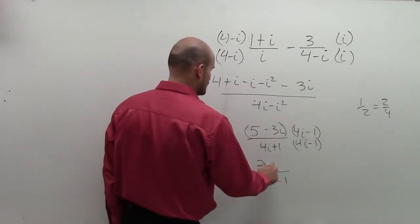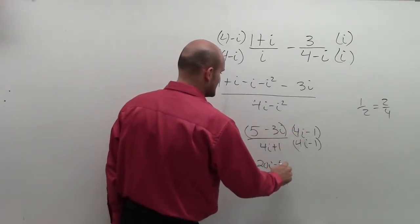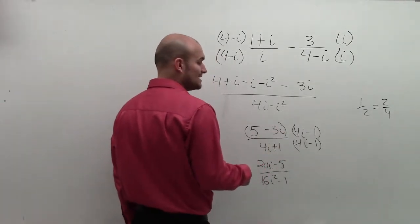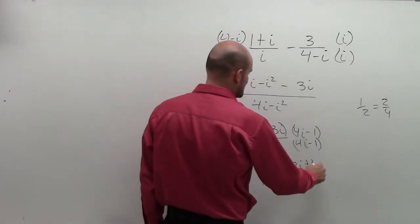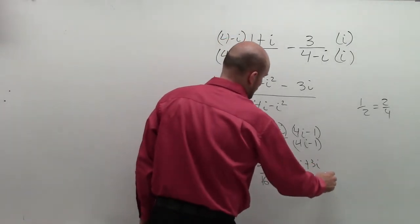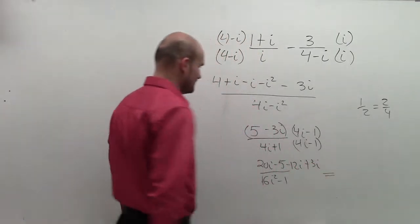All over this multiplied out. 5 times 4i is 20i. 5 times negative 1 is negative 5. Negative 3i times 4i is negative 12i squared. And negative 3i times negative 1 is positive 3i.